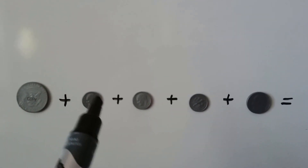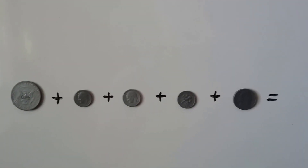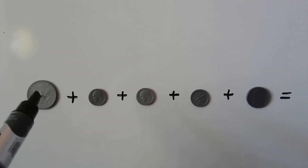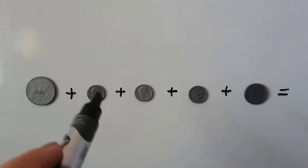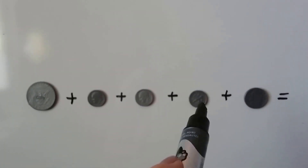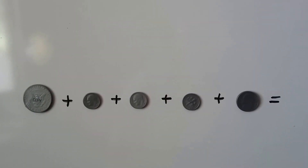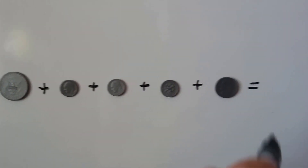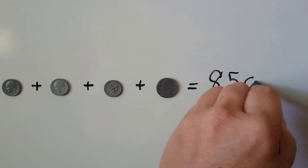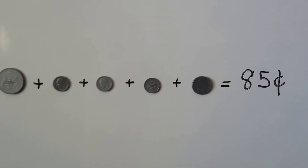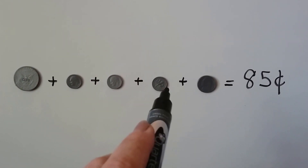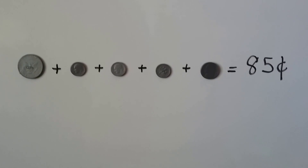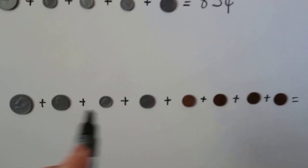Let's try again. We have a half dollar and three dimes and a nickel. The half dollar is 50, and now we skip count by 10s: 50, 60, 70, 80, and five more: 81, 82, 83, 84, 85. A half dollar, three dimes, and a nickel is 85 cents.